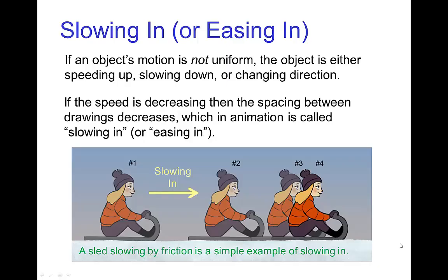Slowing in, or sometimes called easing in, is when you have the motion of something that's not uniform — it's speeding up, slowing down, or changing direction. When the speed is decreasing, the spacings decrease, and in animation this is called slowing in. A sled that's slowing down due to friction and then coming to a stop would be an example of slowing in.